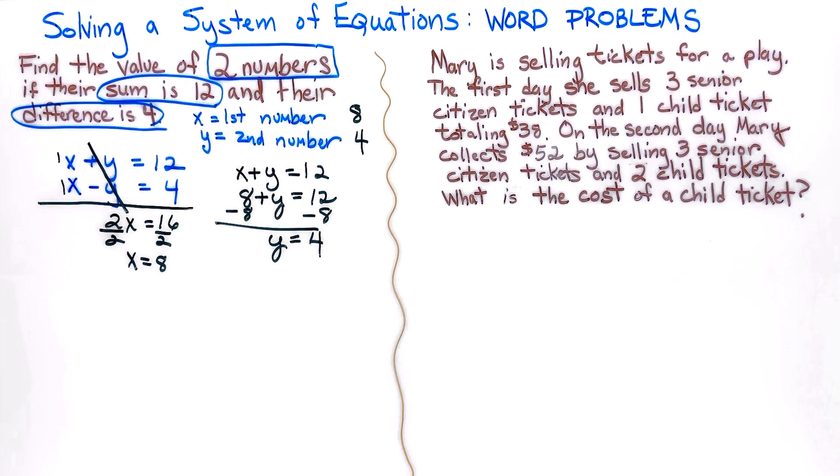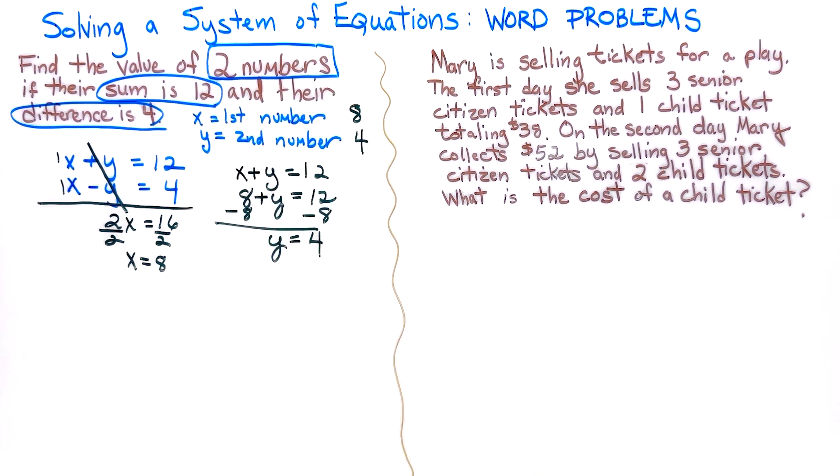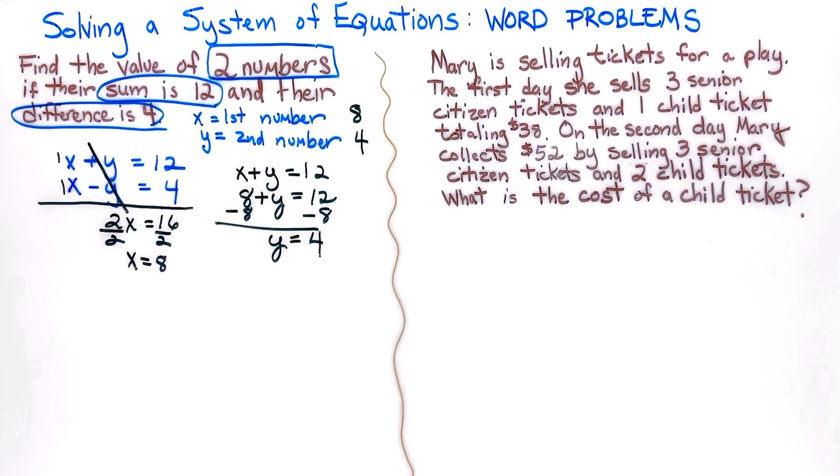Well, let's look at the next word problem that seems to be very lengthy right here. Mary is selling tickets for a play. The first day, she sells three senior citizen tickets and one child ticket, totaling $38. On the second day, Mary collects $52 by selling three senior citizen tickets and two children tickets. What is the cost of a child ticket?